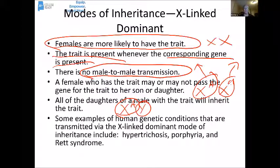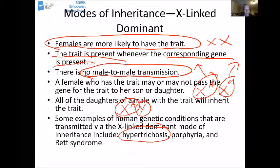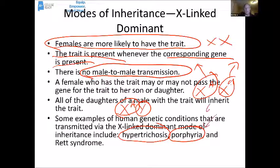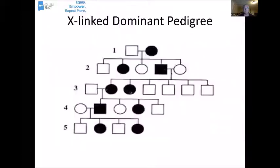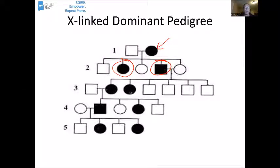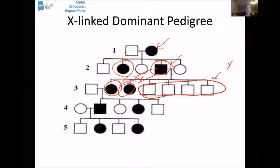Several human conditions are transmitted through X-linked dominant inheritance: hypertrichosis (sometimes called Wolfman syndrome, where people get a coat of hair essentially all over the body), porphyria (a rare blood disorder — George III may have had this), and Rett syndrome. In a pedigree for X-linked dominant, a female with the trait can pass it to a daughter and a son. The son passes it to daughter and daughter — all his daughters but none of his sons — because sons get the Y from dad. A female passes it to both male and female children because females give X chromosomes to both sexes.